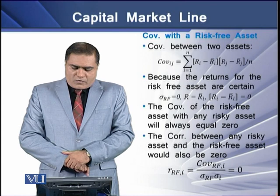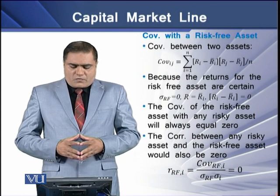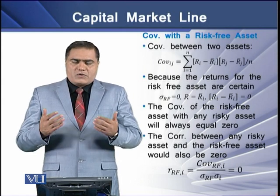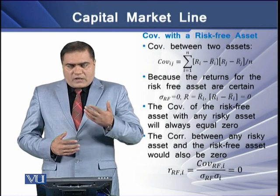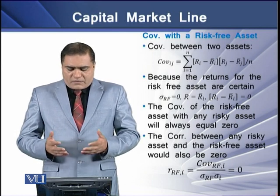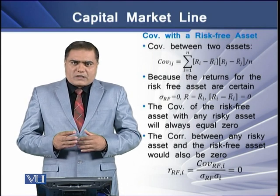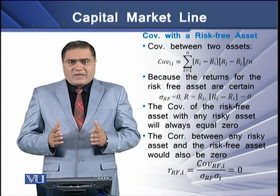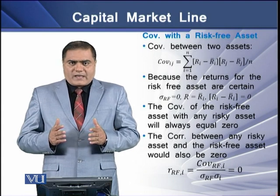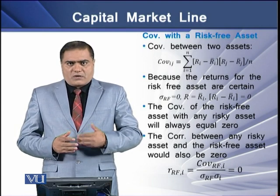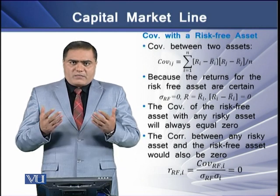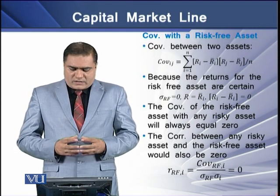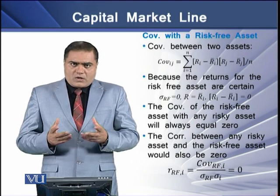First, we consider the covariance with a risk-free asset. The covariance between two assets is the sum of their individual mean deviations. If RI refers to the return on risk-free assets, then since the returns of risk-free assets are certain, both the standard deviation and mean deviation of risk-free asset returns equal zero. This means the covariance of a risk-free asset with any risky asset will always be equal to zero.